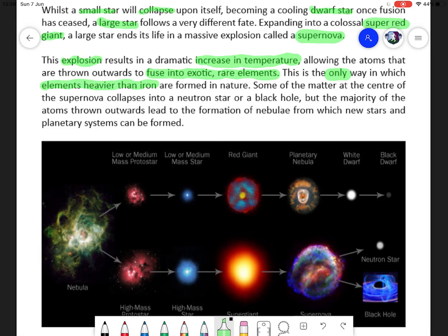Every rare element above iron is formed in this way, and that's the only way that they are formed in nature. So anything above iron on the periodic table only occurs in nature through the death of a giant star.